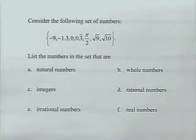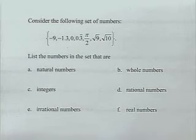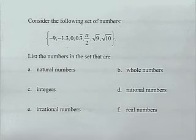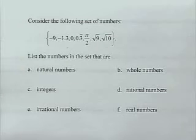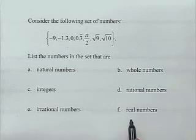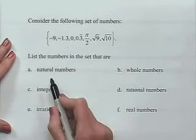In our next problem we're going to be considering different sets of numbers. Consider the following set: negative 9, negative 1 and 3 tenths, 0, 0.3 repeating, pi over 2, square root of 9, and square root of 10. We want to list the numbers in the set that belong to each category: natural numbers, whole numbers, integers, rational numbers, irrational numbers, and real numbers.